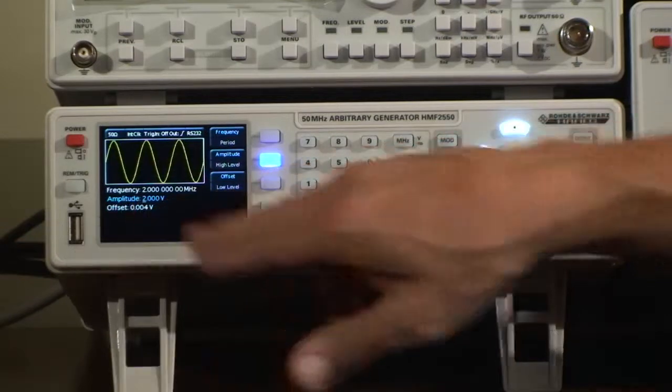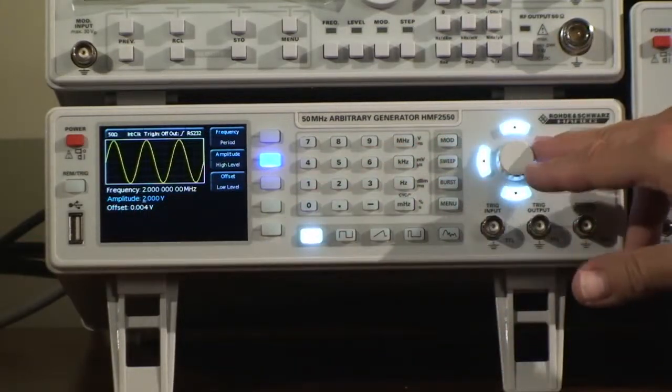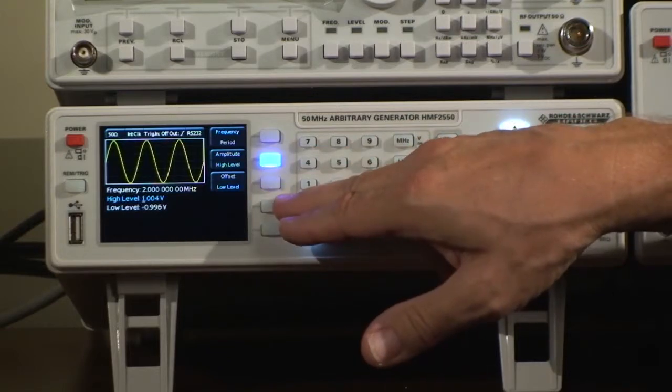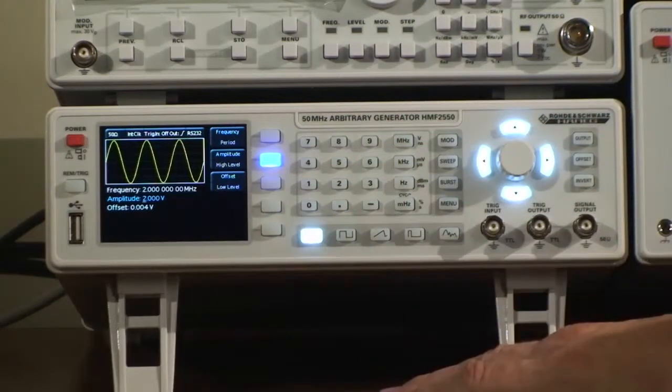Amplitude, which here now is 2 volt. I can either key it in or I can use the turn knob. I can also instead of amplitude choose high level, low level. The alternative is of course amplitude and offset.